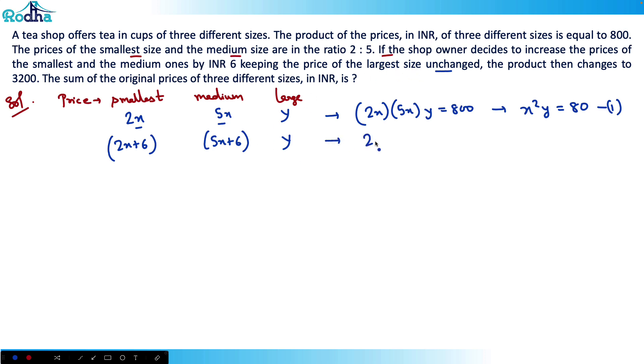Then the product changes to 3200, so it says that now (2x + 6)(5x + 6)y = 3200. That's my equation 2.